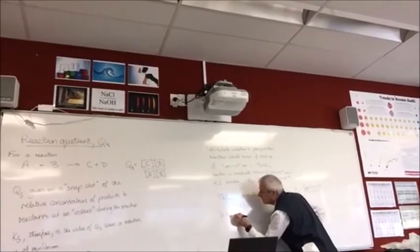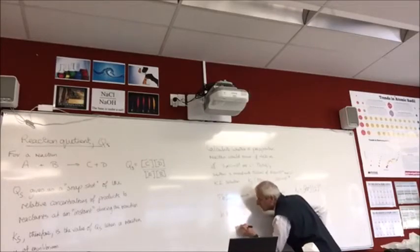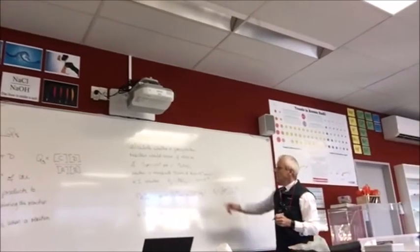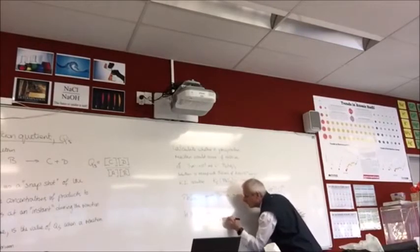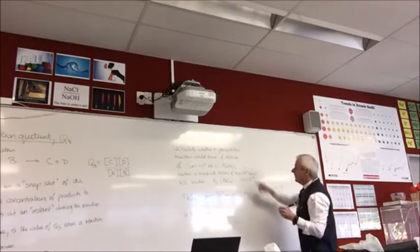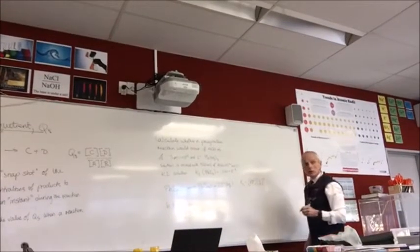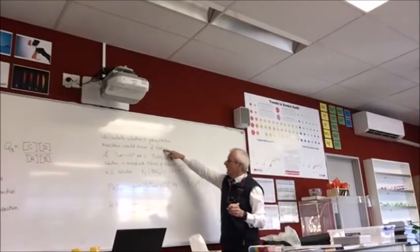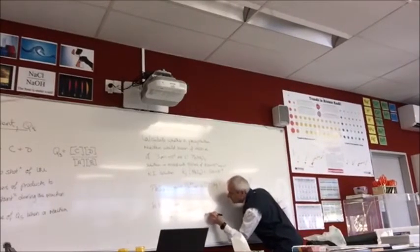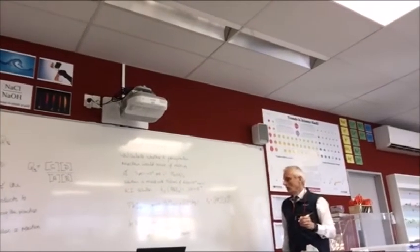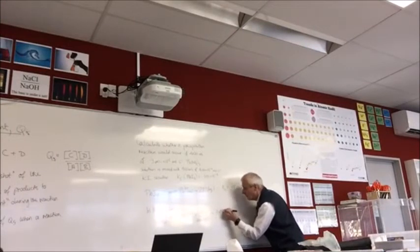Now we need to calculate the diluted concentrations. For [Pb²⁺]: the original concentration of Pb²⁺ is 3 × 10⁻² mol/L. We take that times the original volume — we don't need to convert to litres provided both volumes are in mL — and the total volume after mixing is 900 mL (that's 400 + 500). This gives a diluted [Pb²⁺] of 0.0133 mol/L.